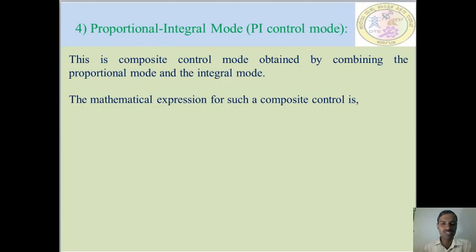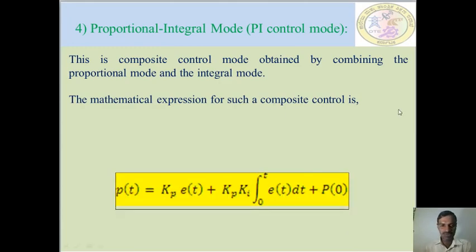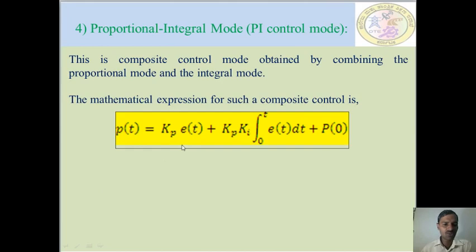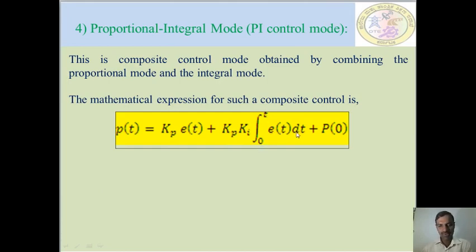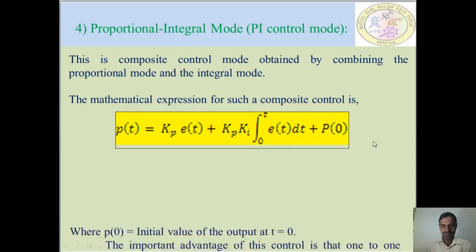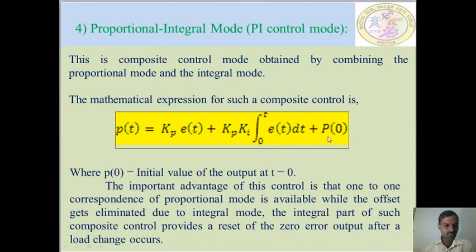The mathematical expression for this composite control is given below. P(t) = Kp·e(t) + Kp·Ki·∫(t0 to t) e(t)dt + P0, where P0 is the initial value of the output at time t = 0. The important advantage of this control is that the one-to-one correspondence of proportional mode is available while the offset gets eliminated due to the integral mode.